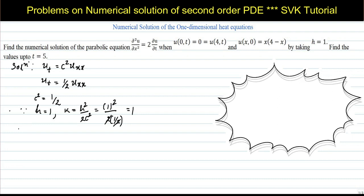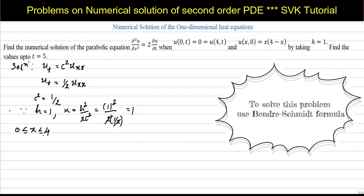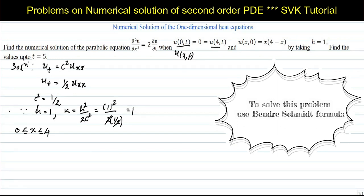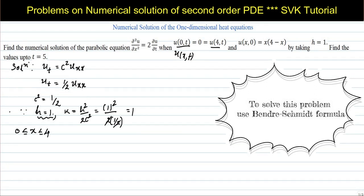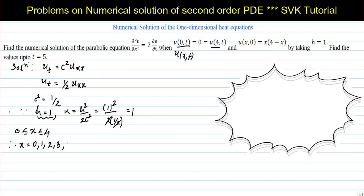Now to find the values of x: the range is 0 to 4, because the given conditions specify u(0,t) and u(4,t), meaning x ranges from 0 to 4. With step size h = 1, we get x = 0, 1, 2, 3, 4.